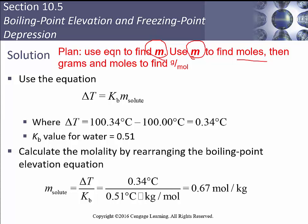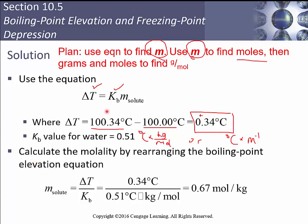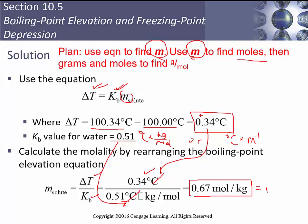Using ΔT = Kb × m: ΔT is 100.34 − 100 = 0.34°C (positive). Kb for water is 0.51 °C·kg/mol. Rearranging for molality: m = ΔT / Kb = 0.34 / 0.51. The degrees Celsius cancel, leaving units of moles per kilogram — that's our molality, approximately 0.67 mol/kg.